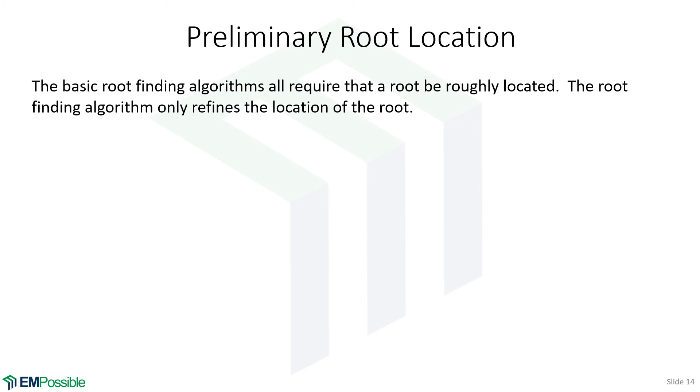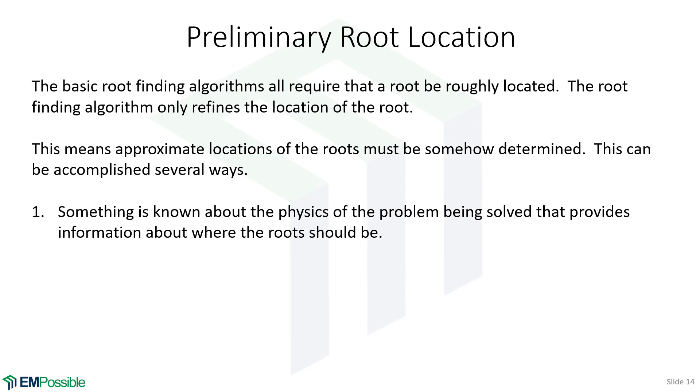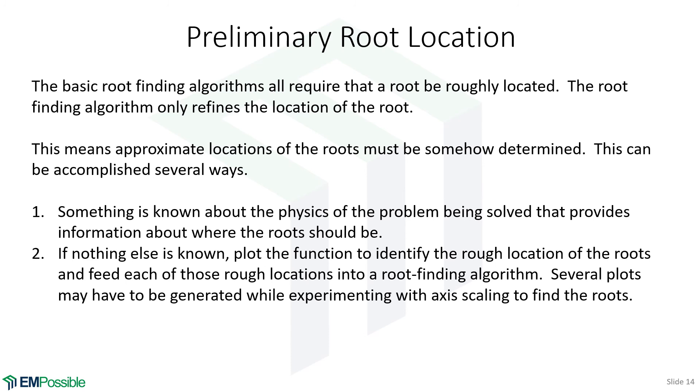Another thing we need to talk about: all of these root finding methods require us to have some rudimentary knowledge of where those roots are. For bracketing methods, we have to choose the bounds. For open methods, we have to choose the initial guess. How do we do that? There's really two ways. One, we might know something about the physics of the problem that gives us a good way to make an educated guess of where the root is. If we don't, what we hope we can do is plot the function. Maybe we calculate 100 points if that's fast enough, plot it, get a rough idea of where that's crossing zero. We can write those down on pen and paper and then feed those guesses into our algorithm to refine where those roots are.